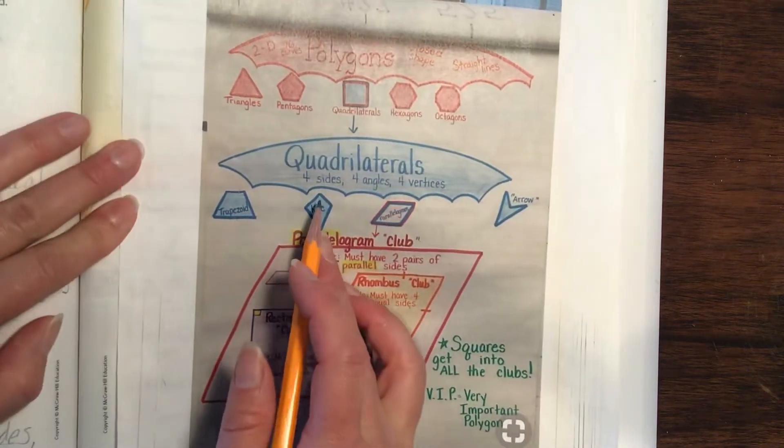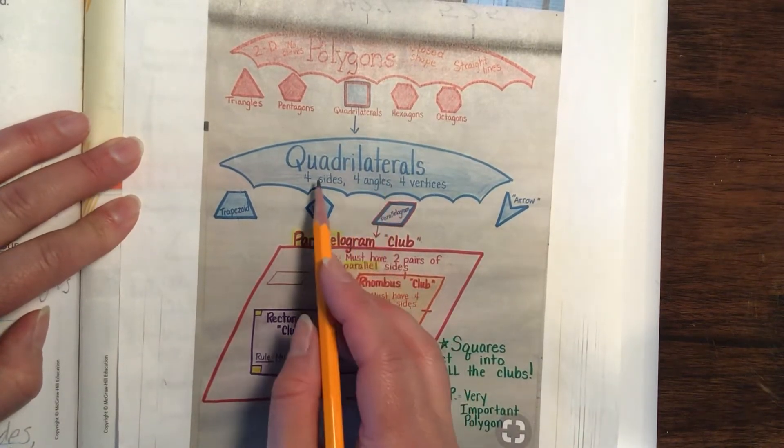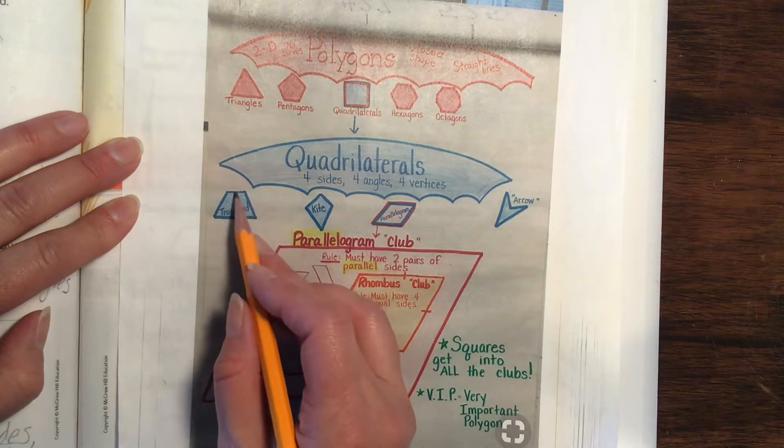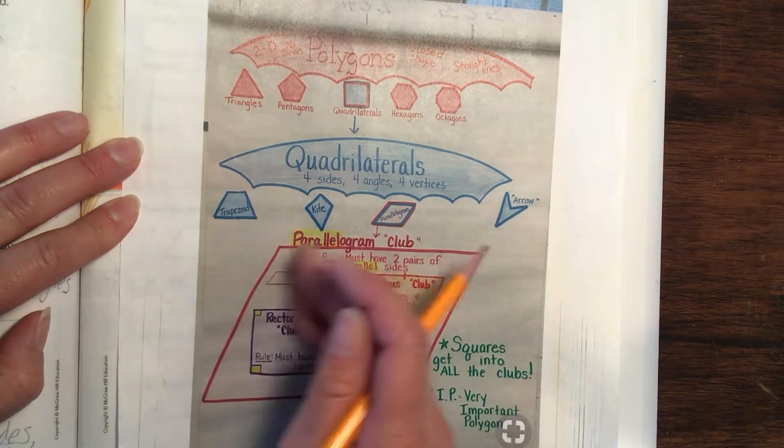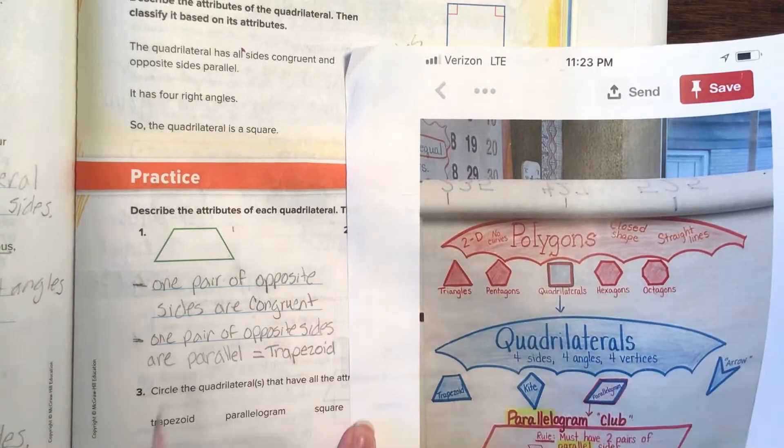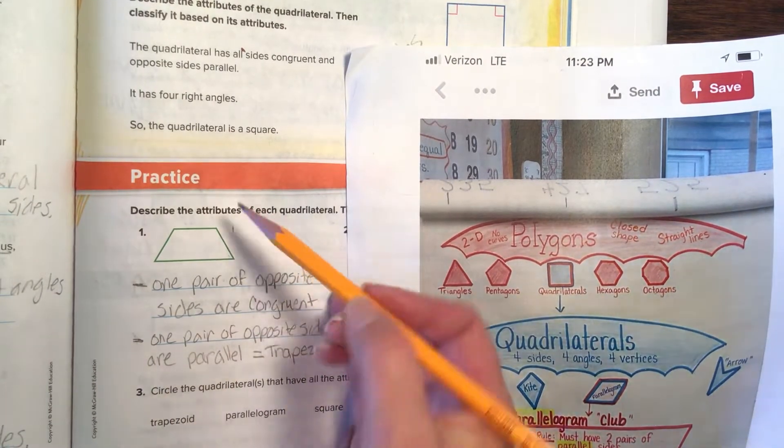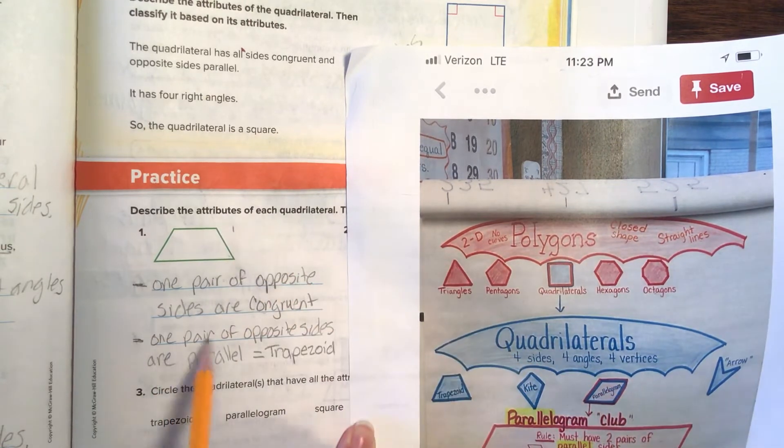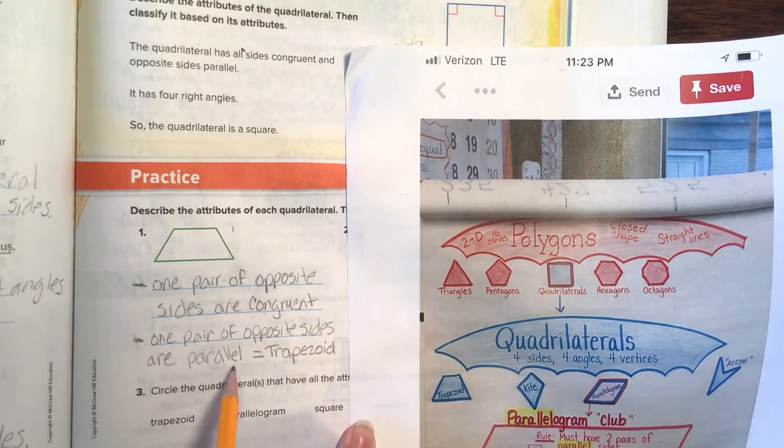So let's classify this here. If we have something, remember quadrilaterals have four sides, four angles, four corners. Trapezoid is the one that only has one pair of parallel sides. So here we go. One pair of opposite sides are congruent, which means these are the same. One pair of opposite sides are parallel, so it must be a trapezoid.